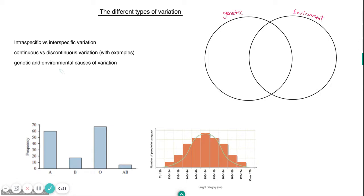Variation - some of it is genetic, some of it is environmental, and some of it is a mixture of both. So first thing we have to know is what actually is variation.